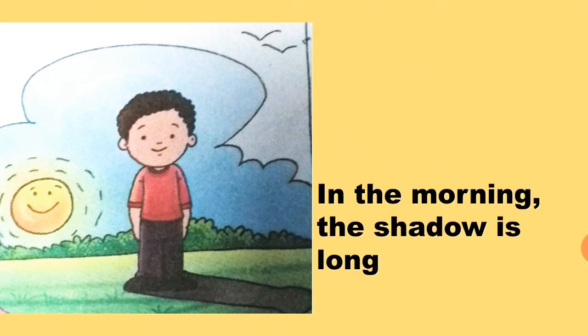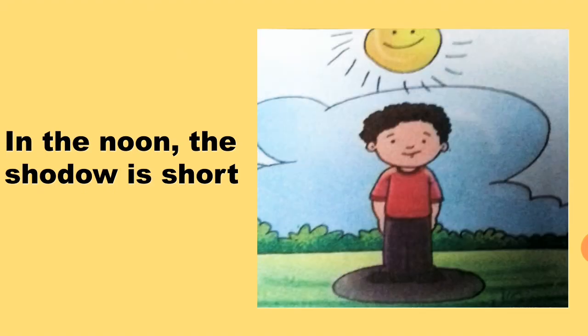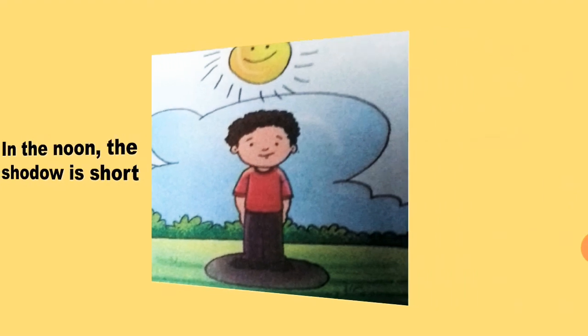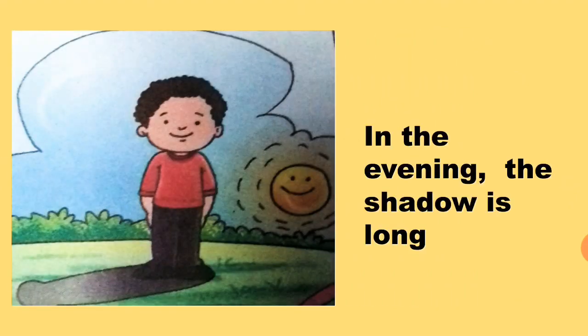In the morning, the shadow is long. In the noon, the shadow is short because the sun is over the head. In the evening, the shadow is long again because the sun is behind us.